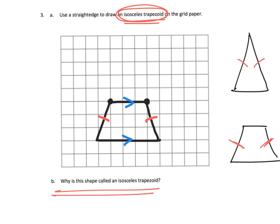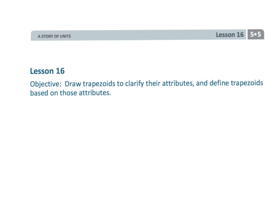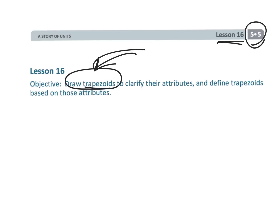That wraps up a fun one using classification. This is fifth grade module 5 lesson 16, where we're really getting down and dirty focusing on what a trapezoid is, clarifying the definition, and agreeing on the attributes of a trapezoid.